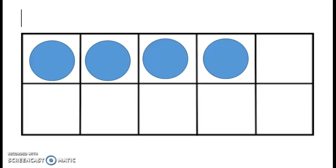In this ten frame, I can quickly tell that there are four chips without having to count them. I can see that only half of the top row is filled and there is one chip missing. We also know that five minus one is equal to four.